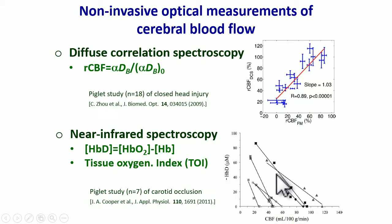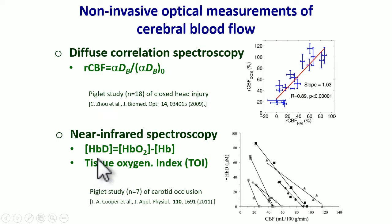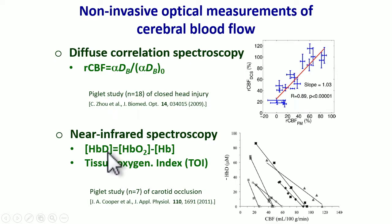There are two problems associated with using hemoglobin difference as a surrogate for blood flow. While the difference hemoglobin concentration is sensitive to blood flow, it is also sensitive to changes in blood volume and changes in metabolic rate of oxygen. Furthermore, the temporal dynamics of this hemoglobin difference are not identical to the temporal dynamics of the driving cerebral blood flow, which is important for dynamic autoregulation.